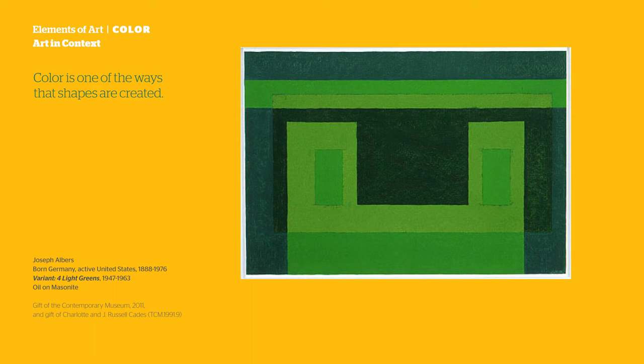Color is one of the ways that shapes are created. How many different color shapes do you see in this monochromatic artwork? Play around with a favorite color and add white, black, and or gray to see what happens.